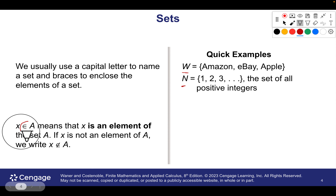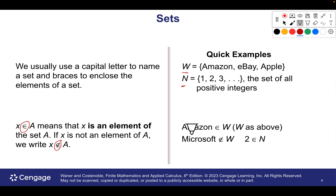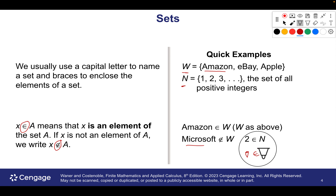Some notation: this little symbol here is the element symbol. You can see it's sort of an E — I think it's a Greek letter, epsilon. When we use this, it means X is an element of A — we know we have some set A that has X in it. We can also use the line through it to say something is not an element of A. Amazon is an element of W because it's right there. But Microsoft is not an element of W because it's not there. Two is an element of N, but zero is not an element of N.